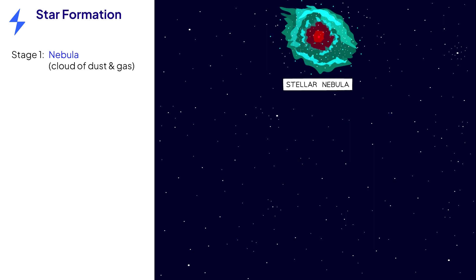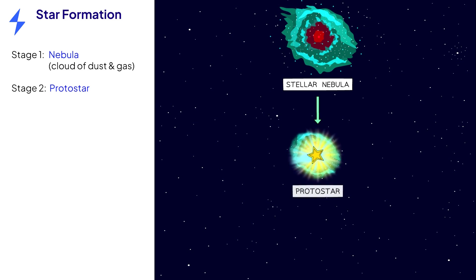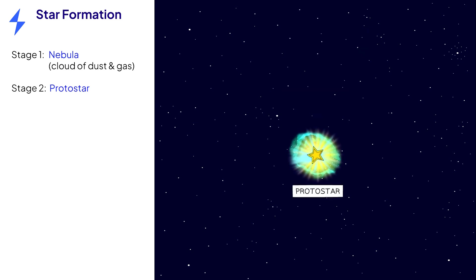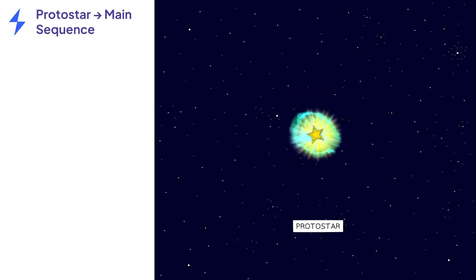So far, we have seen stage 1 of a star's life cycle — the nebula — and stage 2, the protostar. Next, we'll take a look at the final stage in the process of forming a star.